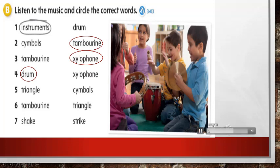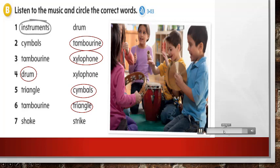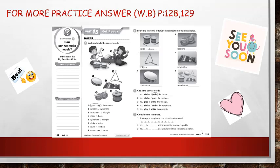Number five: cymbals — super! Number six: triangle — excellent! Number seven: someone is saying strike — no, it's shake. For more practice, answer workbook pages 128 and 129. Thanks for listening, see you soon!